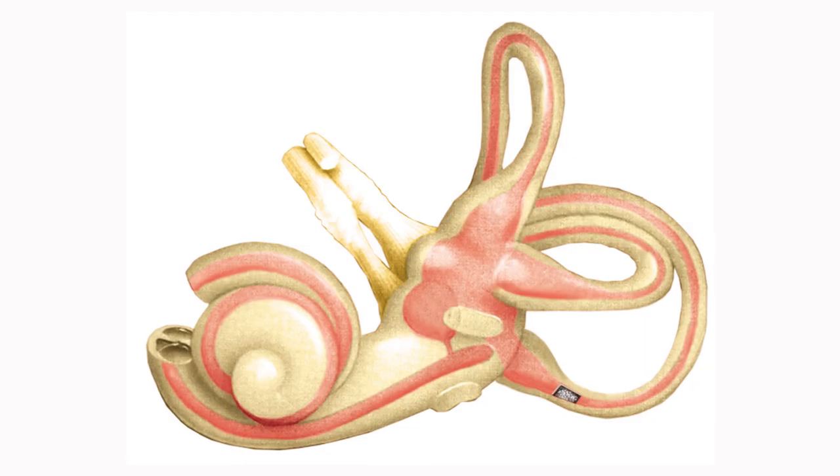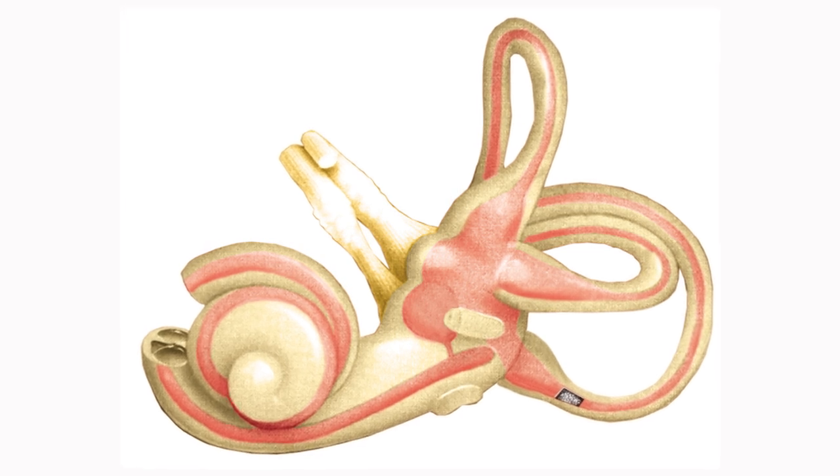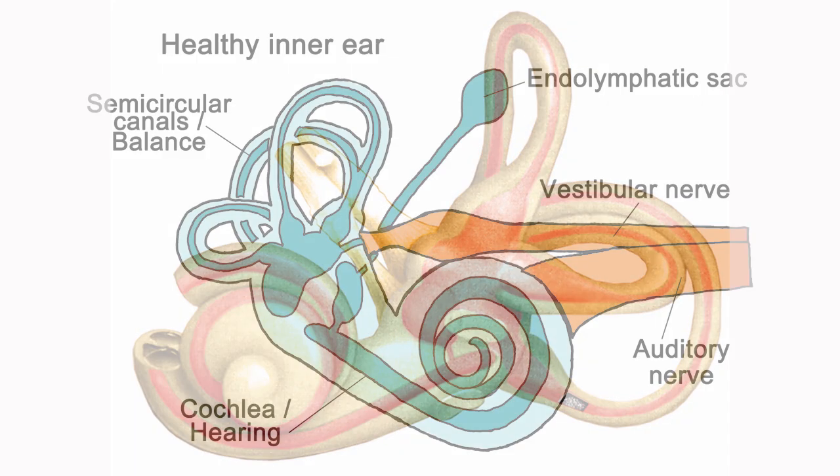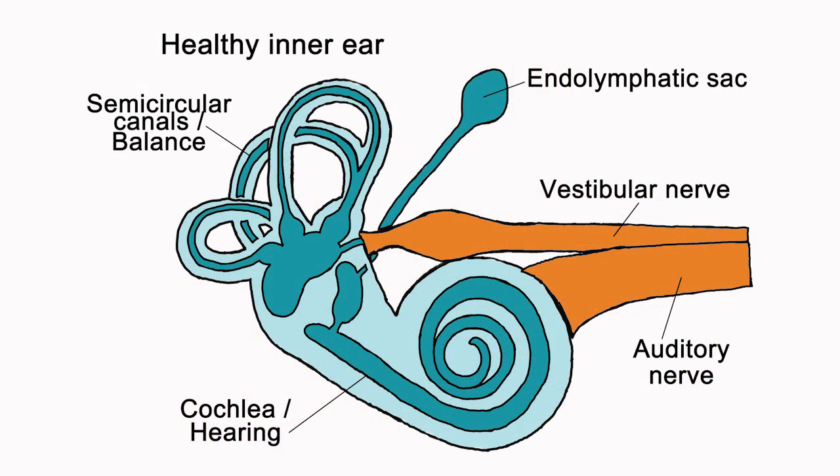To break it down, the vestibular system is responsible for collecting information about our balance and it's sitting in the inner ear right beside the hearing organs. The vestibular system has five compartments: three semicircular canals and two otoliths. And they are collecting movement, vibrations, rotations, accelerations, and tilts.